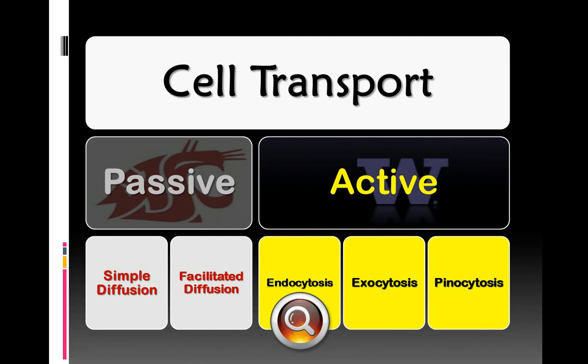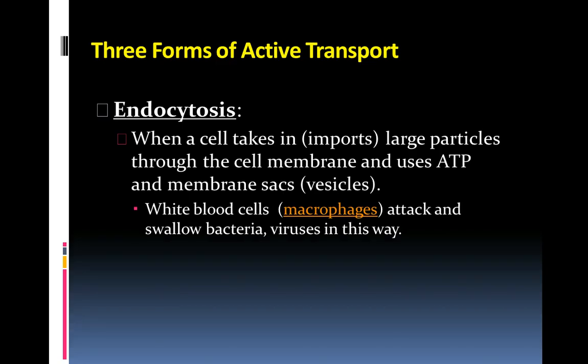So looking at some specialized examples, endocytosis begins the list. So endocytosis is when a cell takes in or imports large particles through the cell membrane and uses ATP and membrane sacs or vesicles. In our immune system, white blood cells are called macrophages and they will attack and swallow bacteria and viruses this way. And this is kind of a fun little video that shows how that happens.